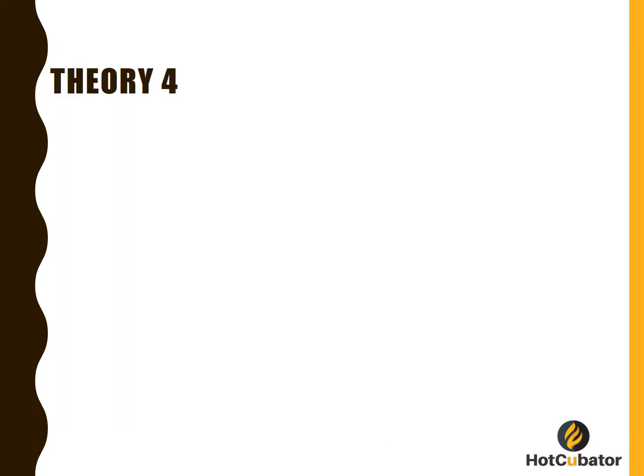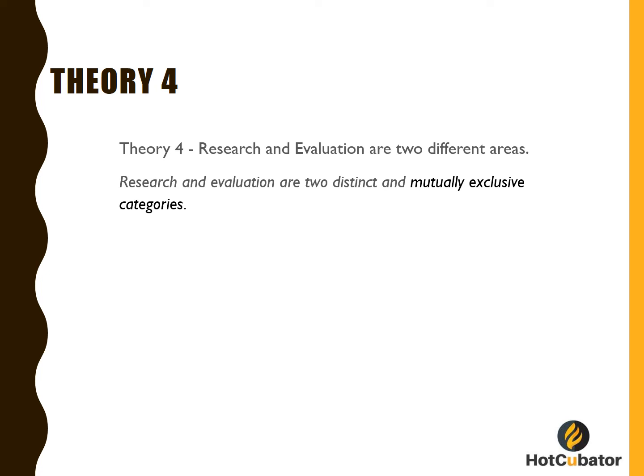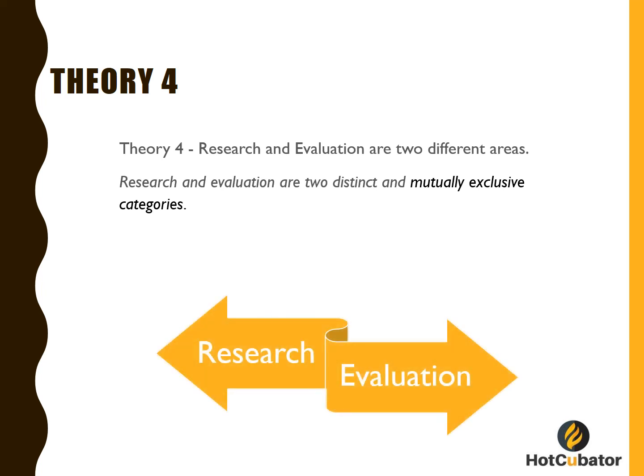The fourth school of thought is premised on the belief that research and evaluation are two different areas. This is where a majority of scholars advocate, saying that research and evaluation are two distinct and mutually exclusive categories, and this is in fact the most common way to think about them. Research is seen as more interested in producing generalizable knowledge, more theoretical, and more controlled by the researcher, whereas evaluation is seen as more interested in specific and applied knowledge, mostly controlled by the funding or commissioning of evaluation projects.